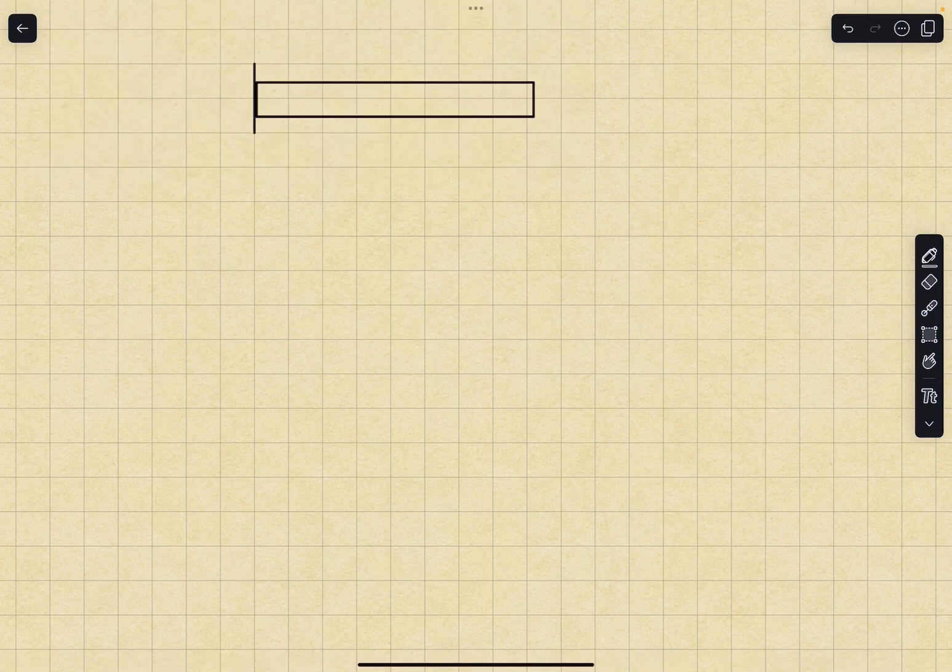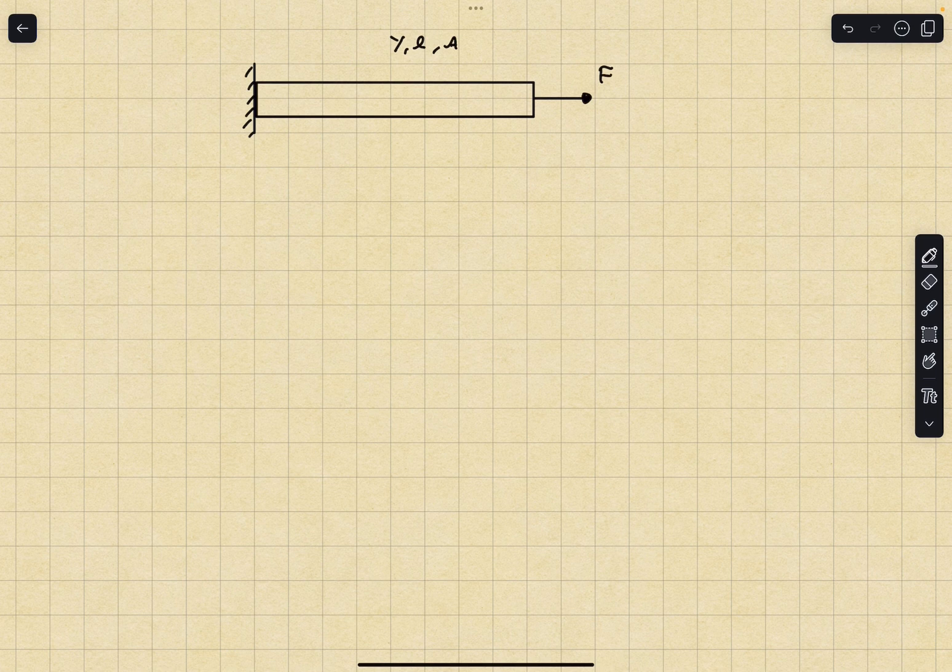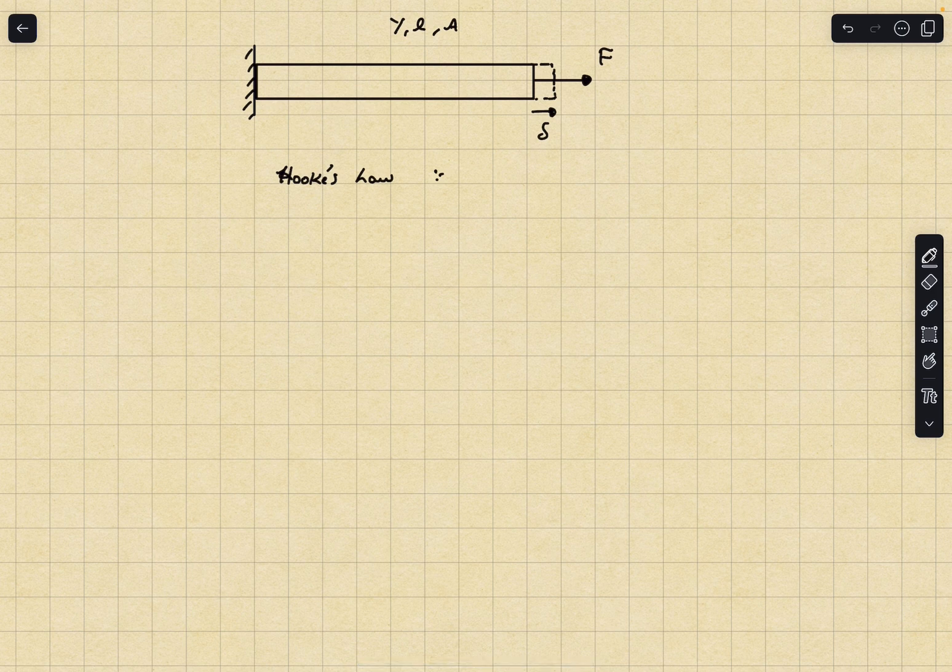Let's first discuss the concept behind this. If I take a rod something like this attached to a wall whose Young's modulus is Y, length is L, and area of cross section is A, and if I apply an axial force F, this rod will elongate by a bit and let's say the elongation is delta.